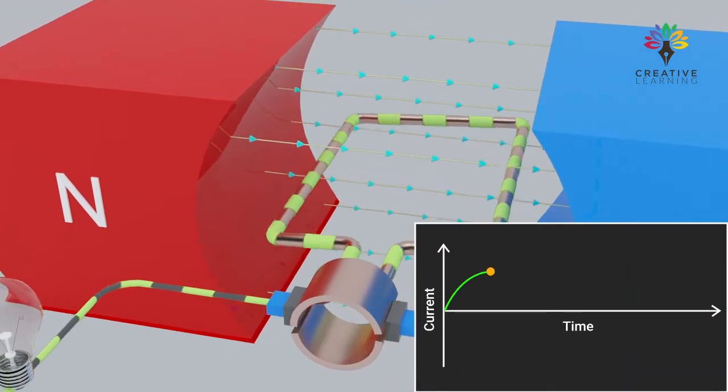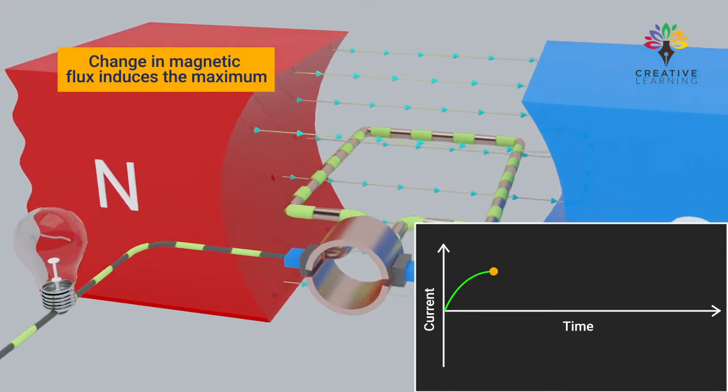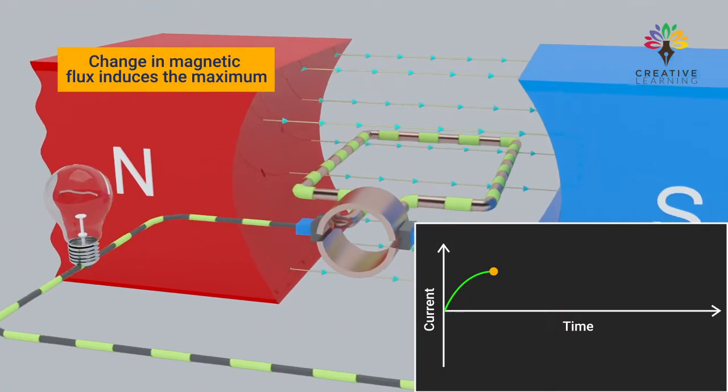When the armature coil reaches a 90-degree angle, the change in magnetic flux induces the maximum EMF, resulting in a peak current flow.